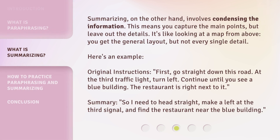Summarizing, on the other hand, involves condensing the information. This means you capture the main points but leave out the details. It's like looking at a map from above — you get the general layout, but not every single detail.